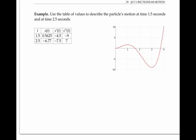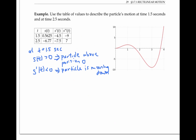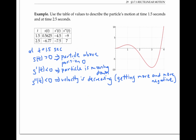Let's use these ideas about velocity and acceleration, and a table of values, to describe the particle's motion at time equals 1.5 seconds. At 1.5 seconds, the position is positive, so the particle is above its baseline position of zero. Its velocity is negative, so its position is decreasing — in other words, the particle is moving down. Its acceleration is also negative. A negative acceleration means the velocity is decreasing. A negative velocity that's decreasing is getting more and more negative, so the particle is moving down faster and faster. The speed, which is the absolute value of velocity, is increasing.